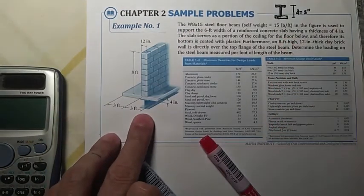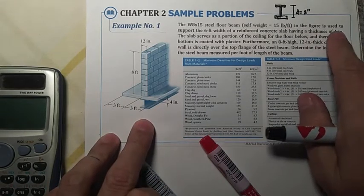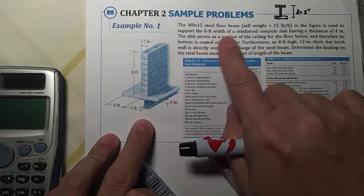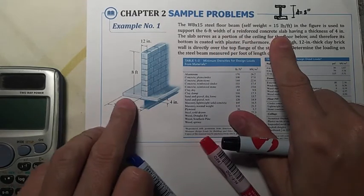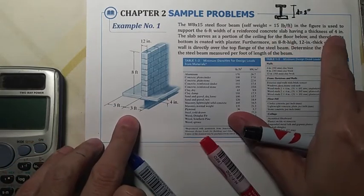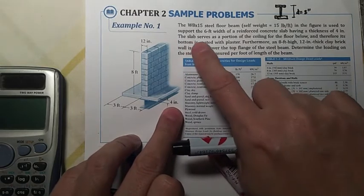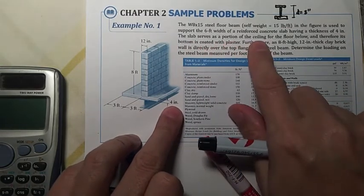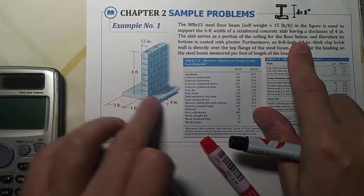Now from the figure, here is the W8 by 15 wide flange beam at the bottom, and it is used to support a 6 feet width of reinforced concrete slab. So on top of the wide flange beam we have a concrete slab 6 feet width, with a thickness of 4 inches.